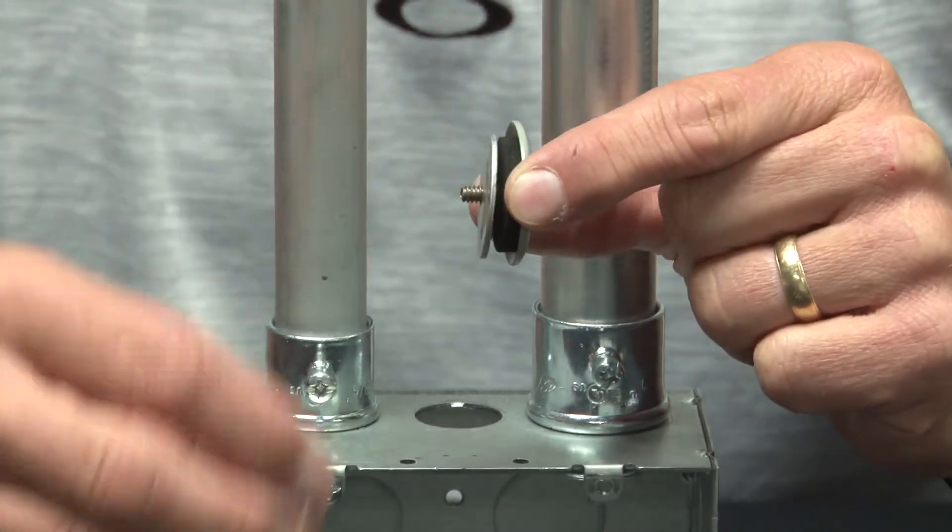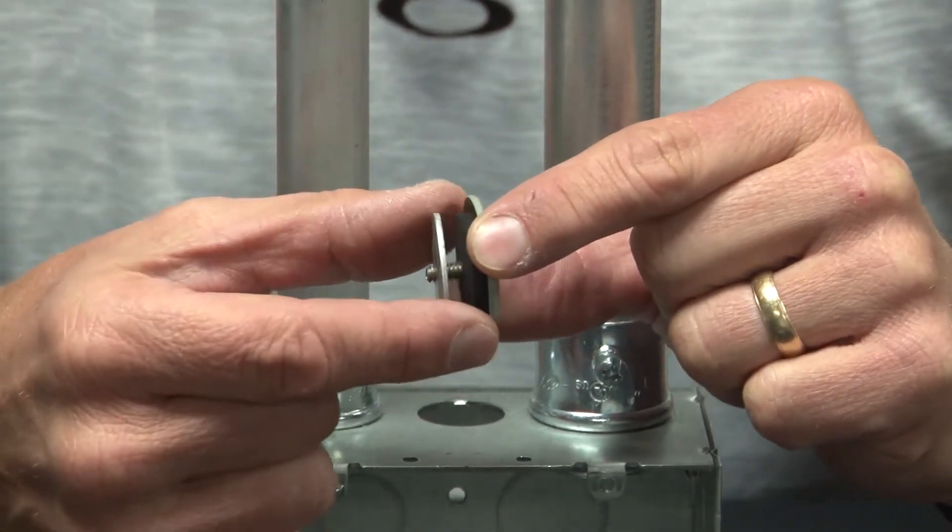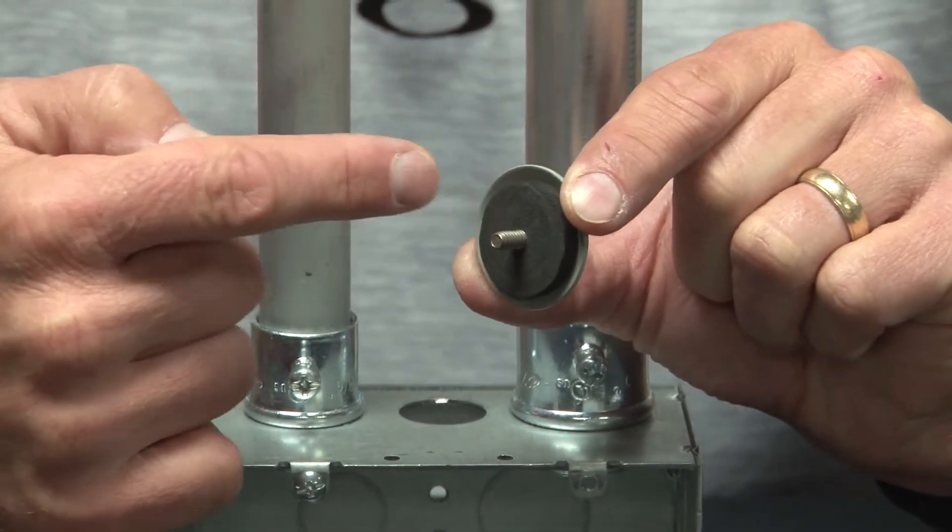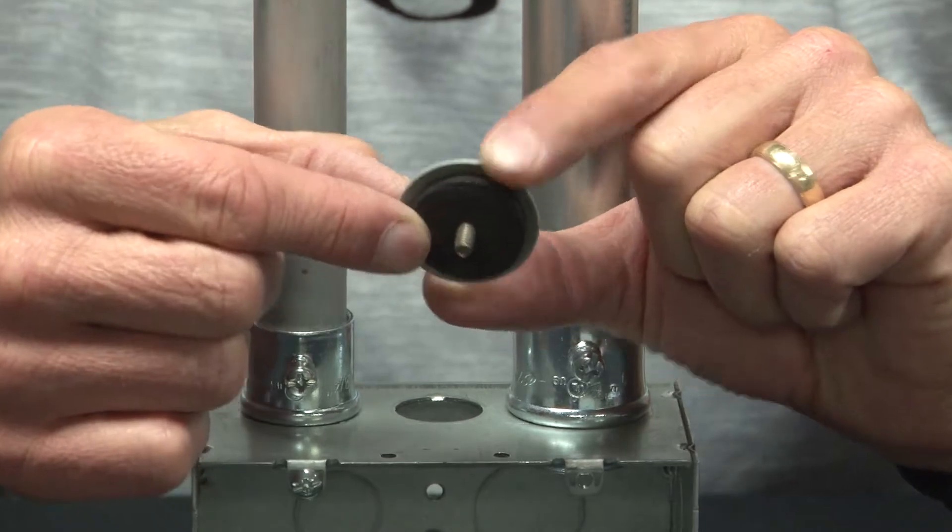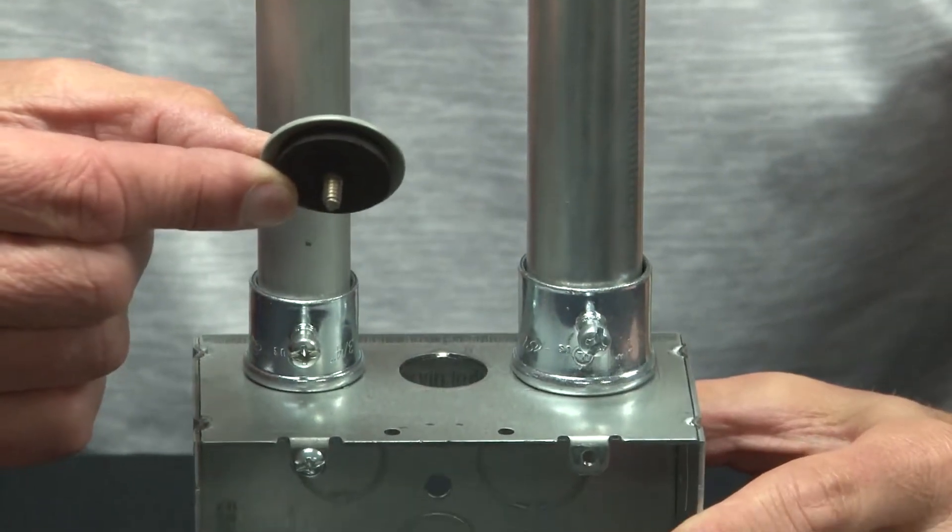Simply remove the thumb screw and the backer bar. As you can see, the rubber gasket is adhered to the back plate, so when you drop it into the knockout that you're trying to close up,